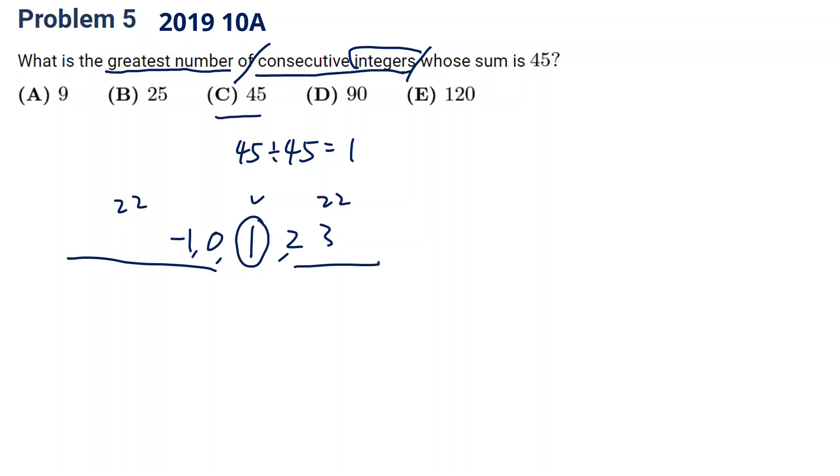So 45 seems like a good choice, but can it be more? Actually, 90 can be more because when there are 90 numbers, you have two middle numbers.